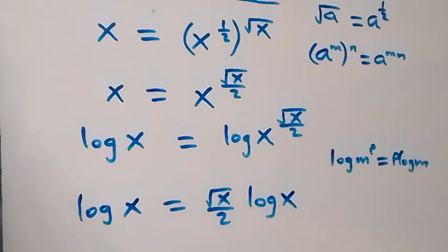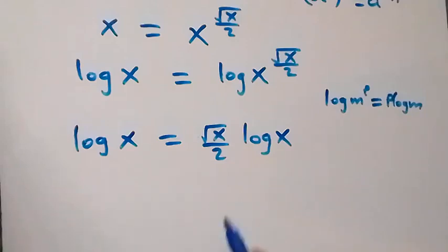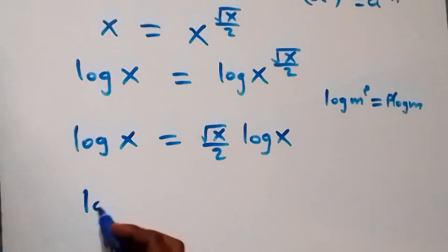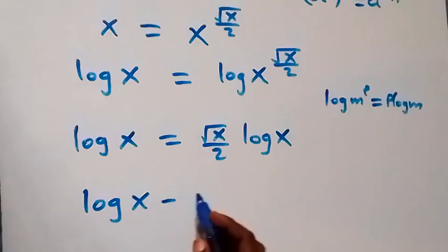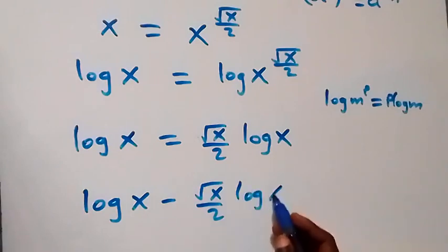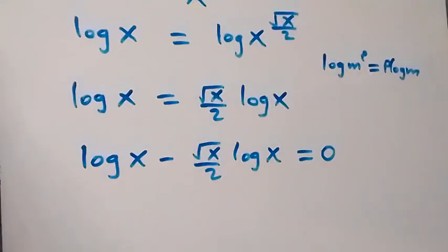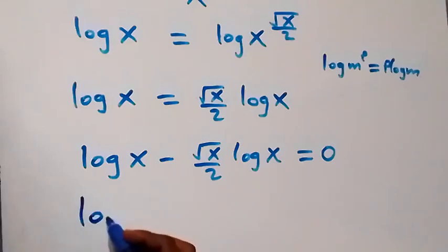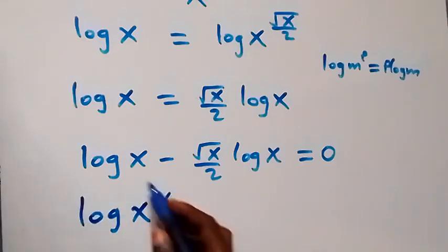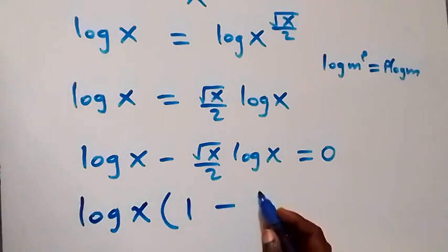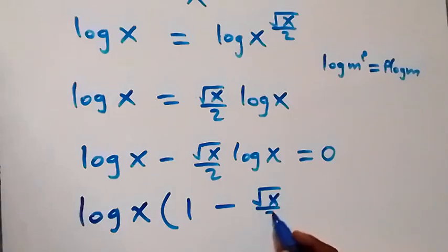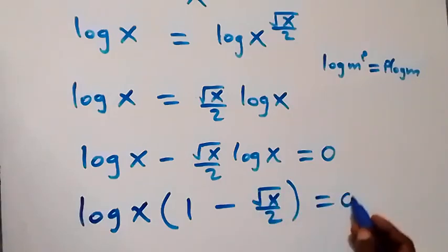Let's take root x over 2 times log x to the left-hand side. We have log x minus root x over 2 times log x equals zero. Factoring out log x, we get log x times the bracket one minus root x over 2, close bracket, equals zero.